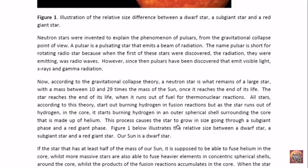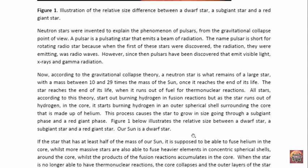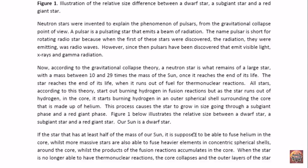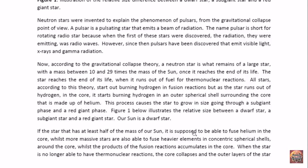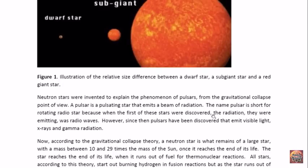So all stars, according to this theory, start out burning hydrogen in fusion reactions. But as the star runs out of hydrogen in the core, it starts burning hydrogen in an outer spherical shell surrounding the core, which is made up of helium. This process causes the star to grow in size, going through a subgiant phase and a red giant phase.